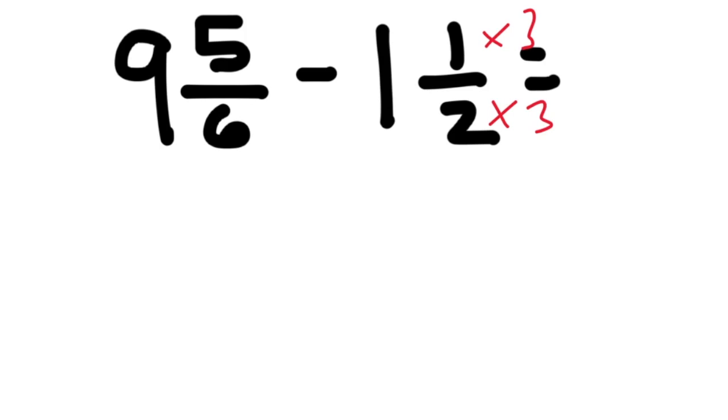In this case, the common denominator is going to be 6. So now we rewrite the problem as 9 and 5 sixths minus 1 and 3 sixths.